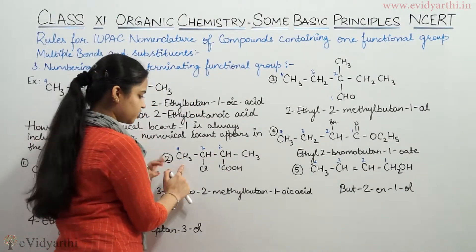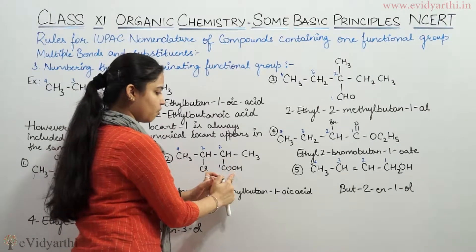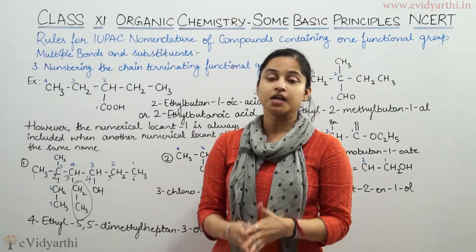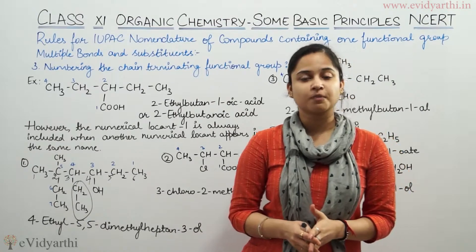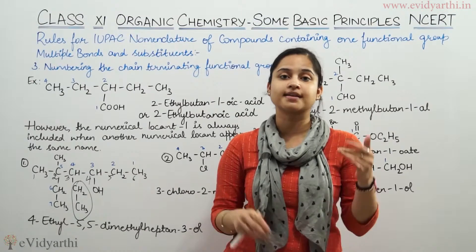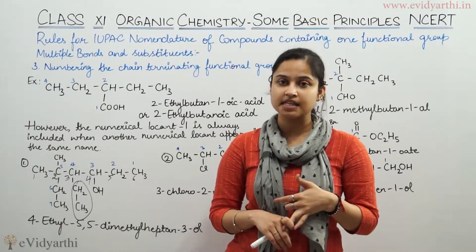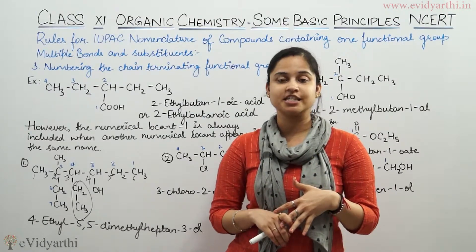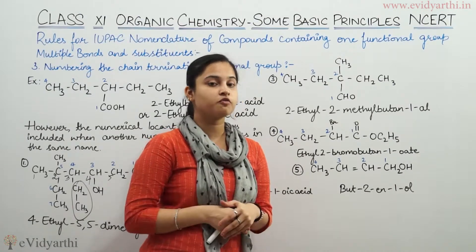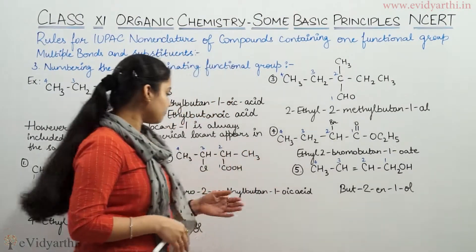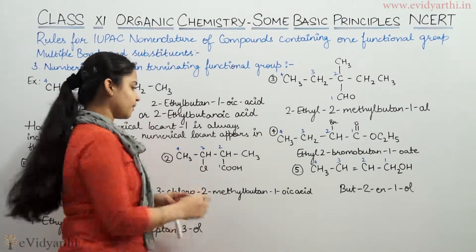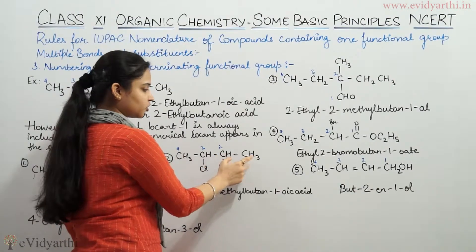Now for the second example — I have taken this compound: CH₃, CH₂, CH(Cl), CH(CH₃), COOH, and CH₃. Remember: if the functional group is a chain-terminating group, we will start numbering from that end — from the functional group itself. If I am having aldehyde (CHO), nitrile (CN), or carboxylic acid (COOH), all these three functional groups have carbon in them, so we will start naming from that carbon. If I number from one end, I get 3 carbons; if from the COOH end, I get 4 carbons.